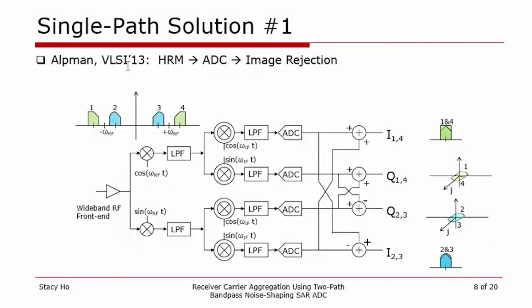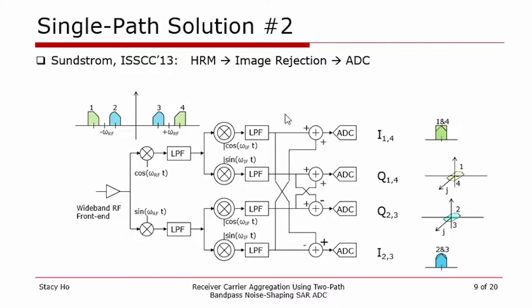An example of a single-path single-IF receiver is from Altman in VLSI 2013, where he uses an analog harmonic rejection mixer followed by baseband low-pass filters and ADCs, with the I and Q components finally separated in the digital domain. Another example is from Sundstrom from ISSCC 2013, who similarly uses analog harmonic rejection mixers but does the I and Q separation in the analog domain before the ADCs.